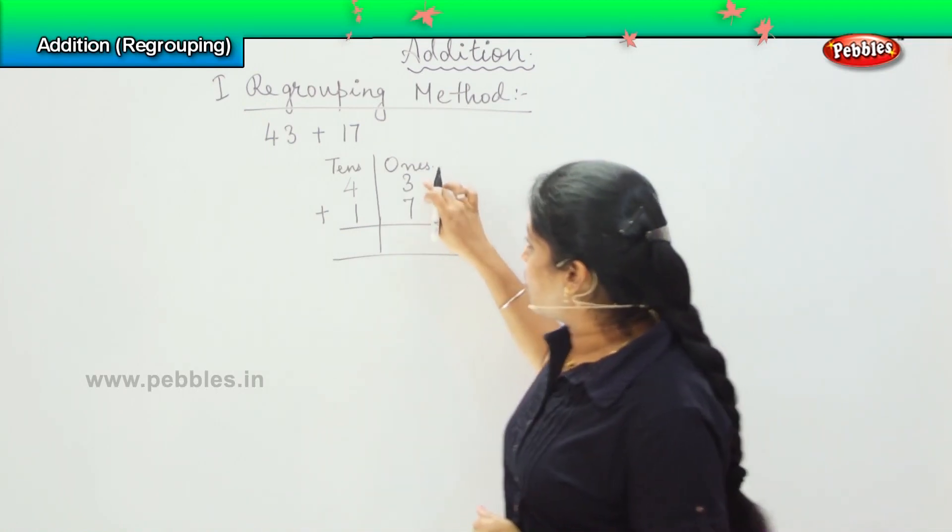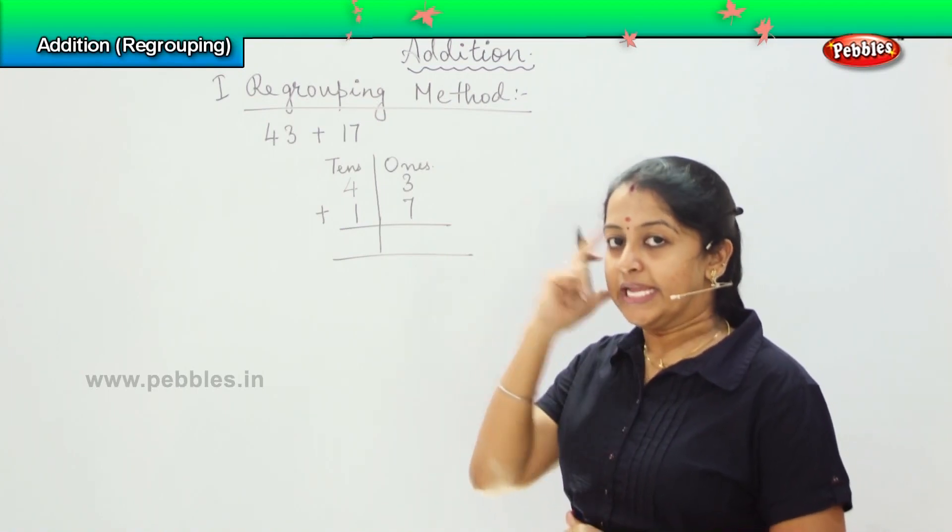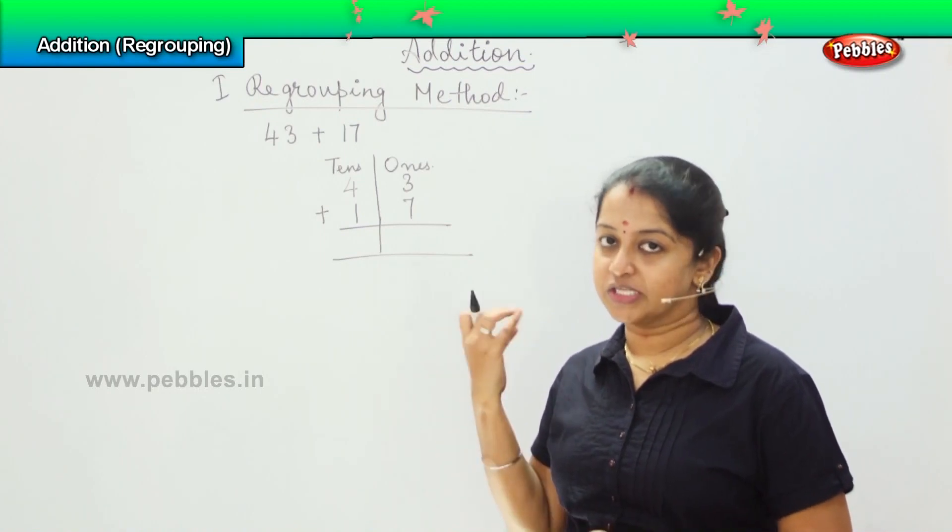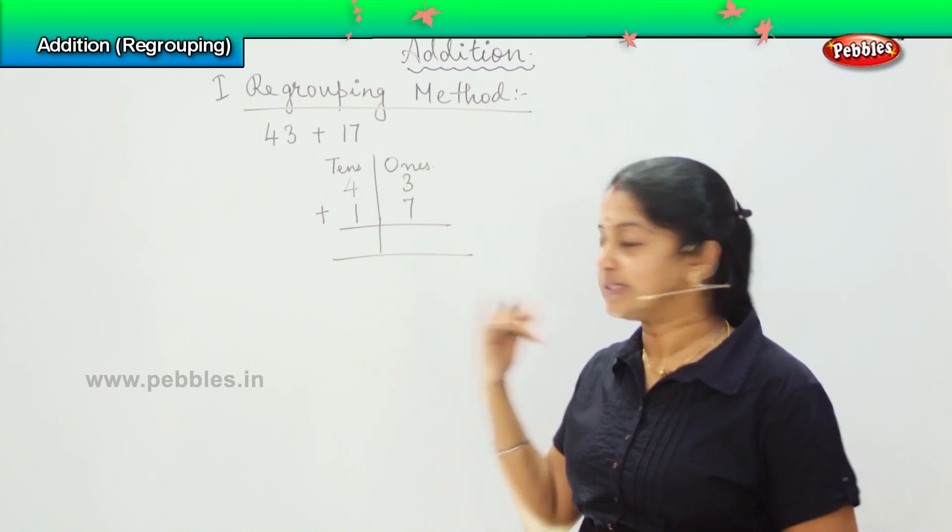So from 3 you have to count 7. So how will you count? Keeping 3 in mind and 7 in fingers. So after 3 it is 4, 5, 6, 7, 8, 9 and 10.